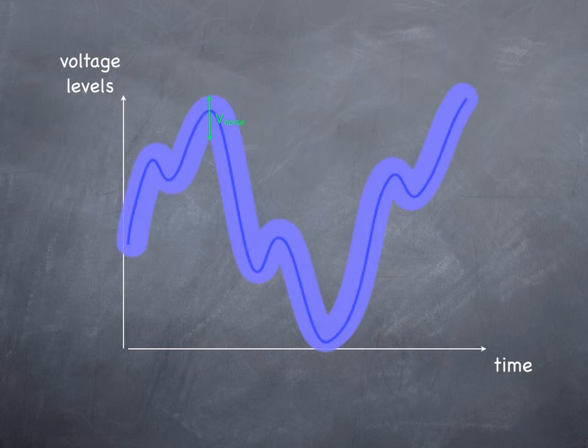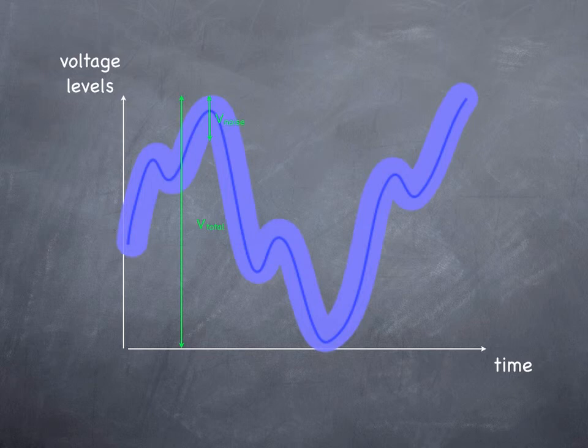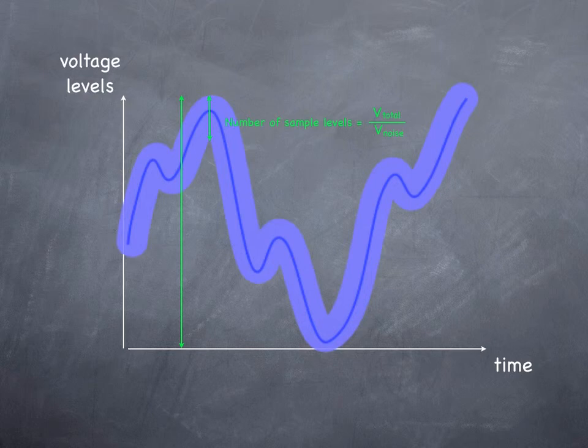In this example, I have called the height of the original analog wave V total. The level of noise is called V noise. In terms of these quantities, the optimum number of sample heights is given by V total divided by V noise.